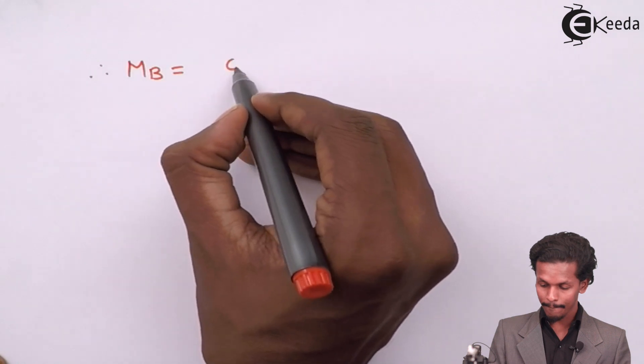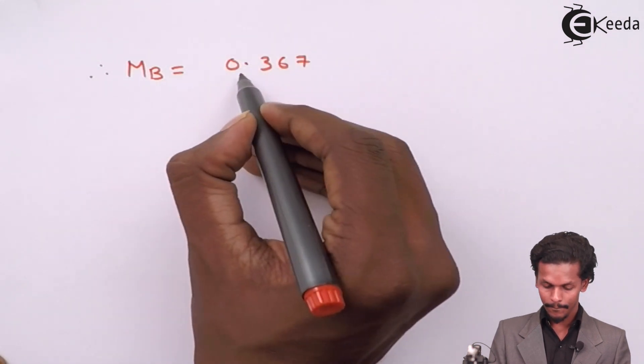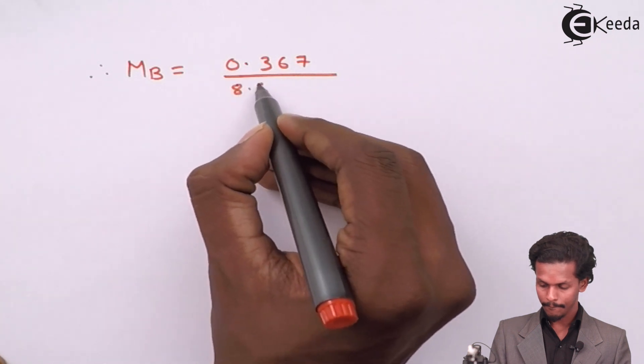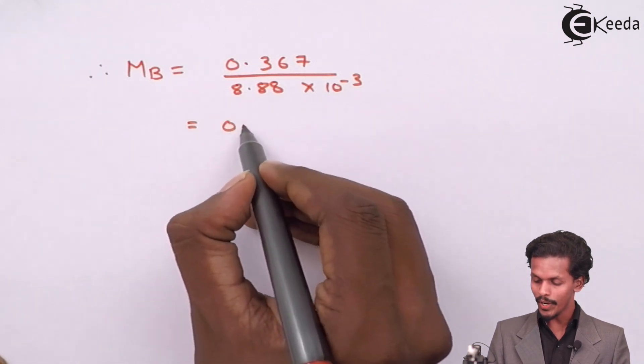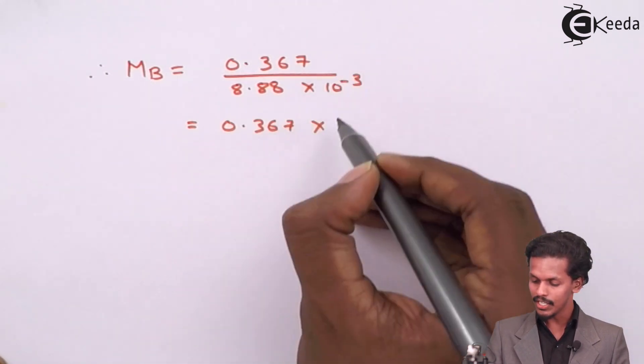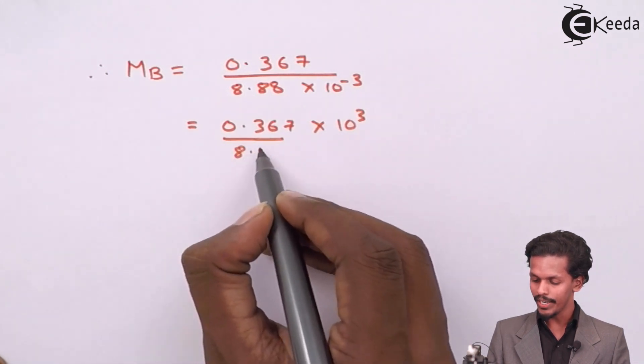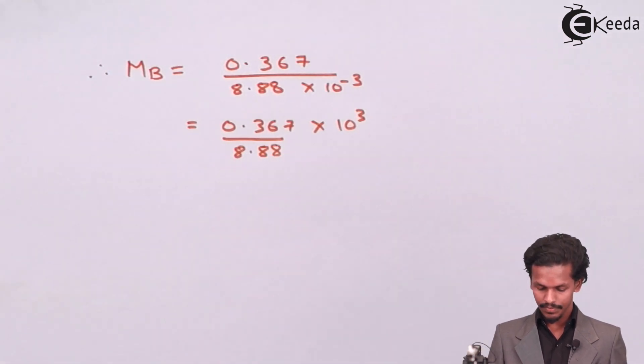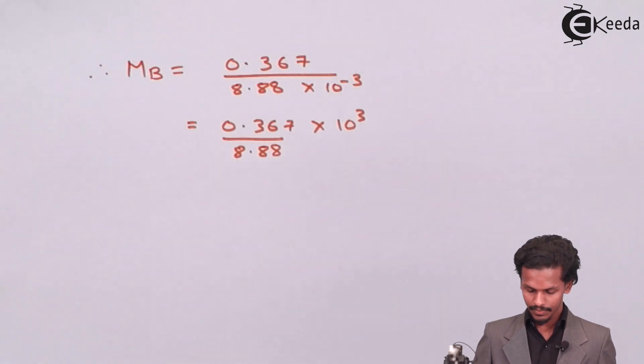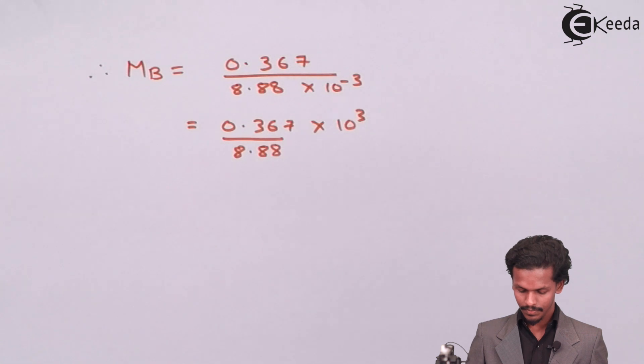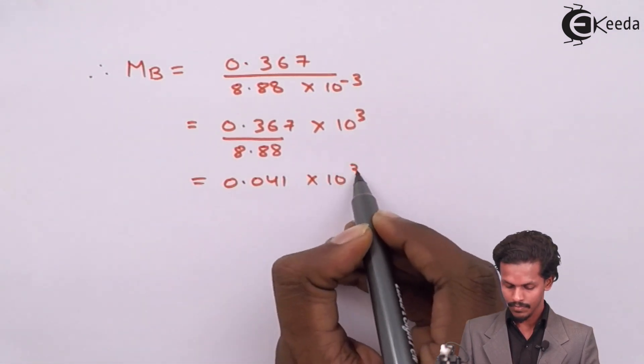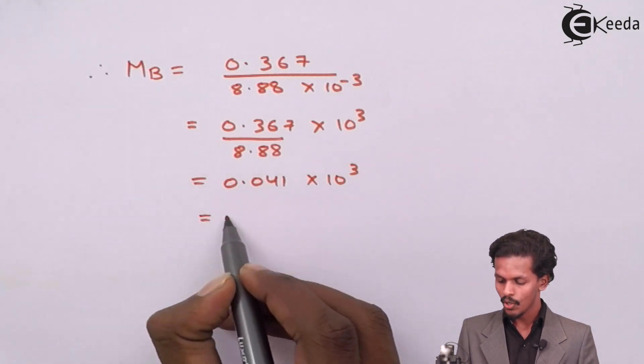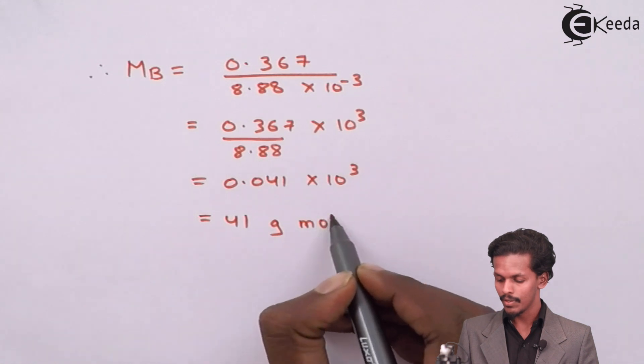Therefore MB is nothing but, so let us substitute the value. Which means 0.367 into 10 raised to 3 divided by 8.88. So the answer is 41 gram per mole.